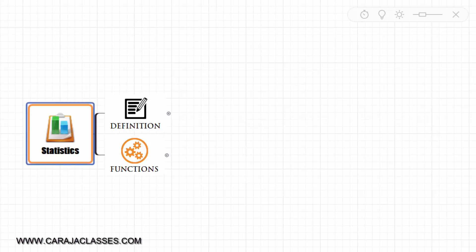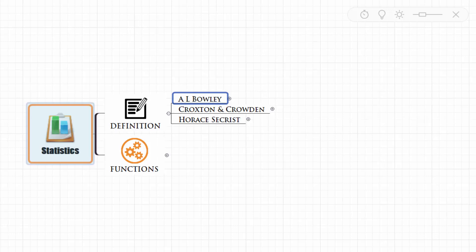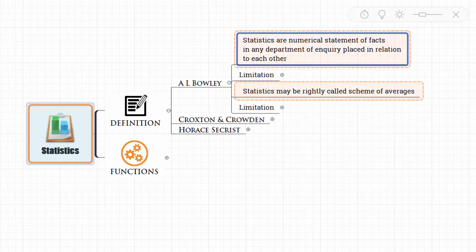In this section, let us understand a few definitions of statistics. First, let's focus on the definition given by A.L. Bowley. The definition reads like this: statistics are numerical statements of facts in any department of inquiry placed in relation to each other. So it's a statement of fact and it's a result of inquiry.